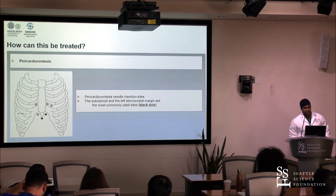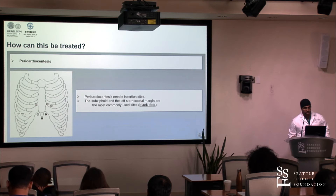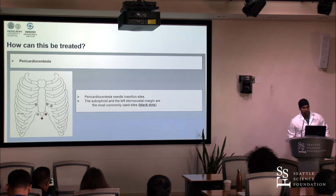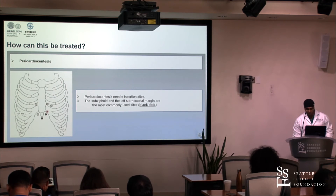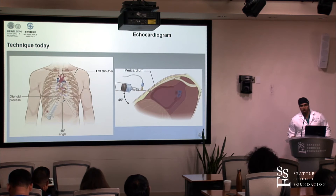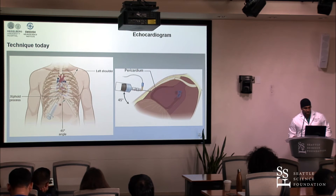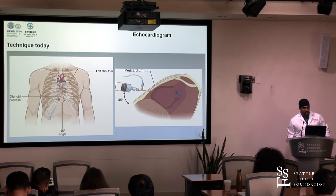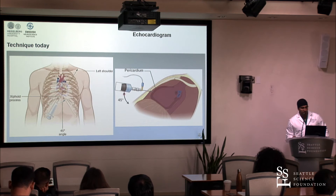There have been many insertion sites described to puncture the sac of the heart. The most commonly used is right beneath the xiphoid, on the left side — between the xiphoid and the sternocostal rib attachment. You aim the needle right beneath the xiphoid process, directed 45 degrees toward the left shoulder. And the sagittal direction of the needle is also 45 degrees. Everything is 45 degrees, so it's easy to remember.